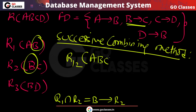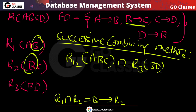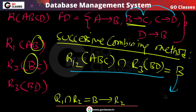Now can we combine A,B,C with R3(BD)? The intersection is B. We need to check if B can determine D. Since B→C and C→D, B can determine D transitively. So B is a candidate key for R3. Therefore we can combine them.